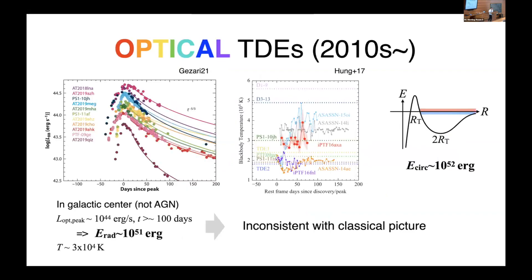However, in the last decade, TDE candidates are detected in optical bands. They happen in the galactic nuclear region and did not show prior nuclear activity. The luminosity is typically 10^44 erg per second, nearly at the Eddington rate, it continues for longer than 100 days, and the temperature is very high compared to supernovae — about a few times 10^4 K. This is clearly inconsistent with the classical picture, so people started to consider theoretical models for optical TDEs.